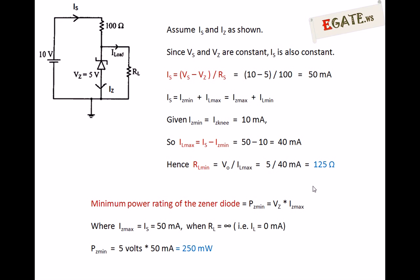VS is the supply voltage, which is 10 volts as given. Since the supply voltage is constant at 10 volts, and VZ — the voltage across RL — is also V0 which is constant, both VS and VZ are constant. Therefore, the current flowing through the 100-ohm resistor, IS, is also constant. IS is the current flowing through the 100-ohm series resistor.